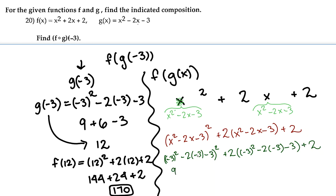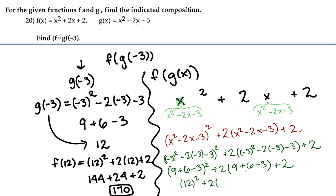Negative 3 squared is positive 9, this gives us positive 6 minus 3 — and remember that whole expression is squared. This gives us 2 times the same thing: 9 plus 6 minus 3, then plus 2. 9 plus 6 minus 3 is 12. So that's 12 squared plus 2 times 12 plus 2. 12 squared is 144, plus 24, plus 2, which is 170 — the same answer.